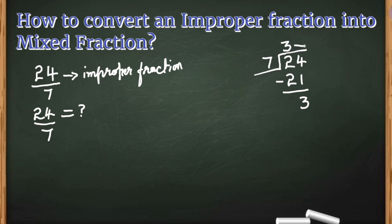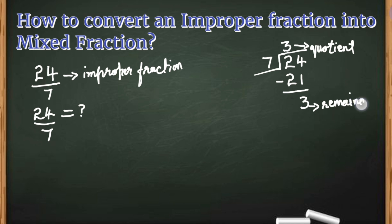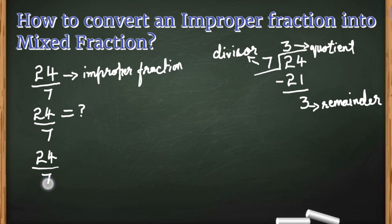Here we divide 24 by 7. So 7 threes are 21, and after subtracting, 3 remains. The division is done. Here 3 is the quotient, the remainder is also 3, and 7 is the divisor. After dividing, we write the quotient, remainder, and divisor as a mixed fraction. So 3 will be the whole number, and for the numerator we write the remainder, which is 3 again.